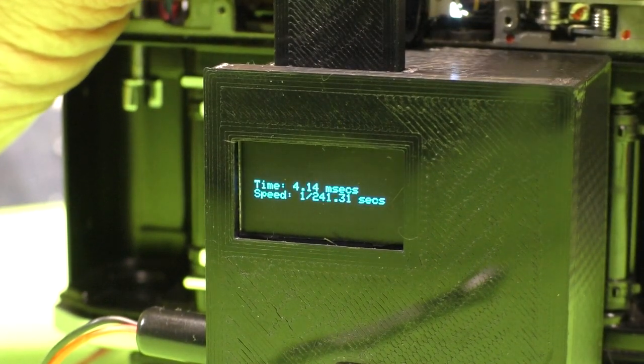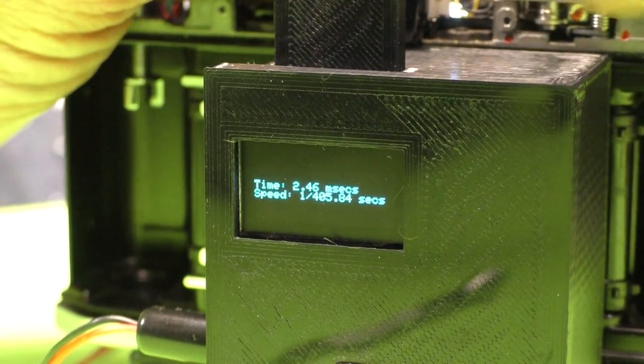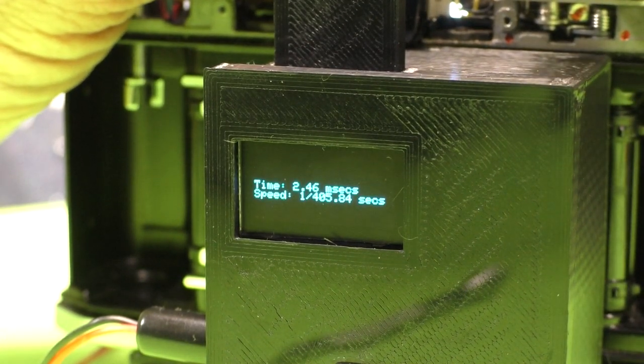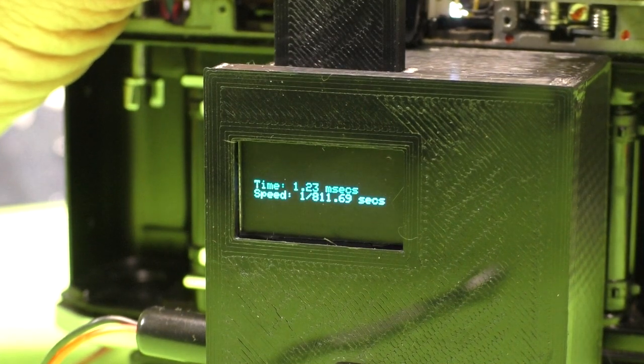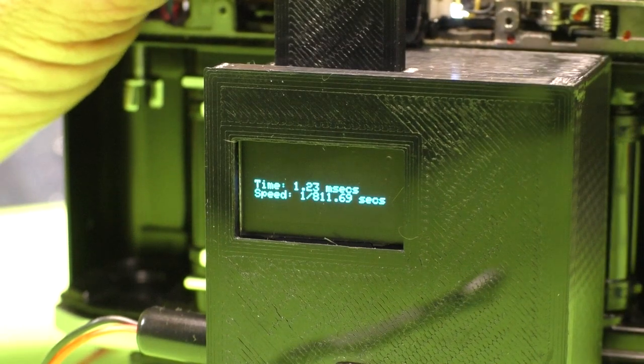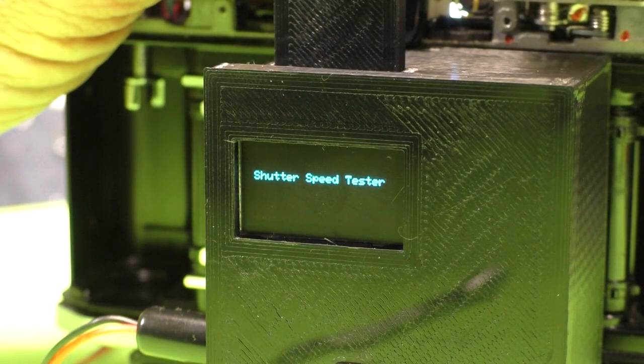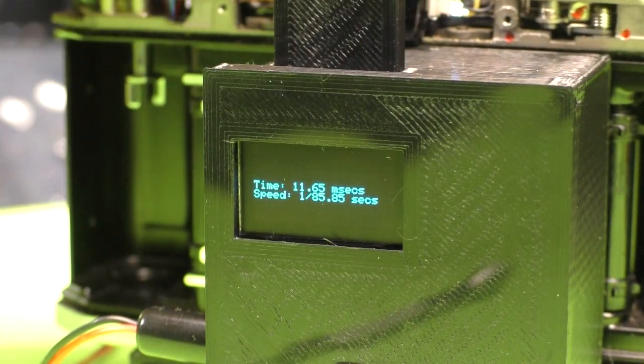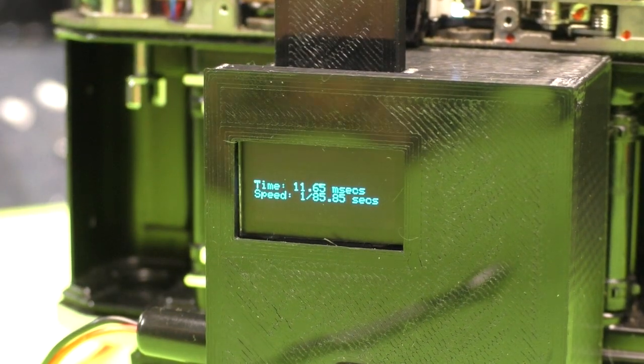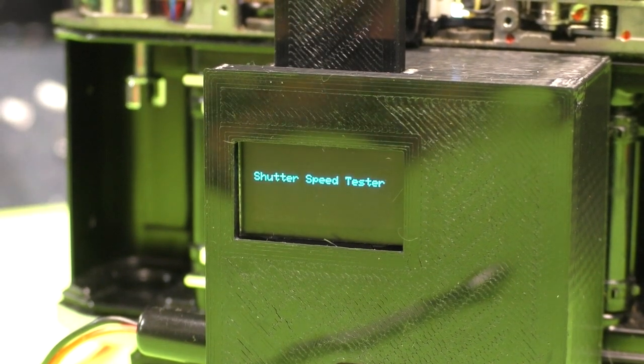So, that's a 250th, which is reading 241. That's not too bad. Let's try a 500th. Let's try a 1/1000th. 405. Let's try a 1/1000th. 811. And back to a 60th is where the flash syncs. And that's 185. So, I think I'm just going to leave it alone right there. That's probably the best I'm going to get this old camera to work.